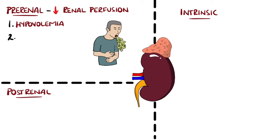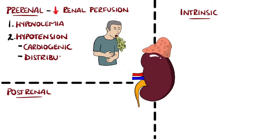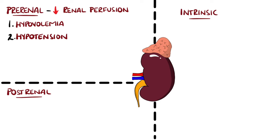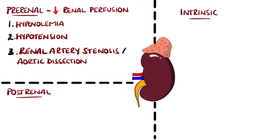Hypotension is another cause, which can itself be caused by hypovolemia, as well as cardiogenic causes, distributive causes like sepsis or anaphylaxis, or obstructive causes like a pulmonary embolism. Renal artery stenosis or an aortic dissection may also interrupt blood flow to the kidneys.